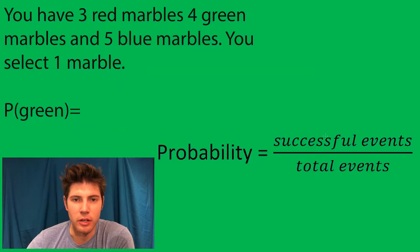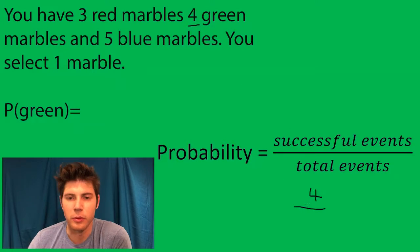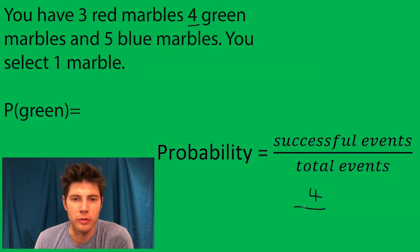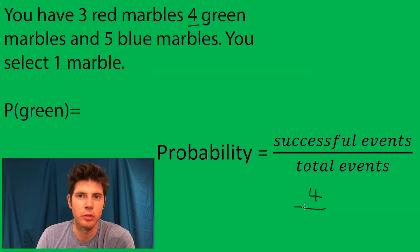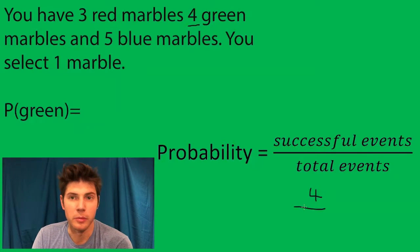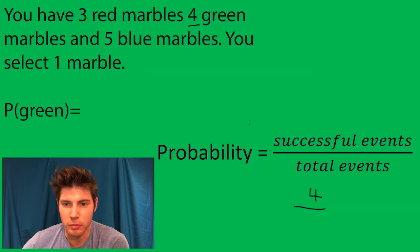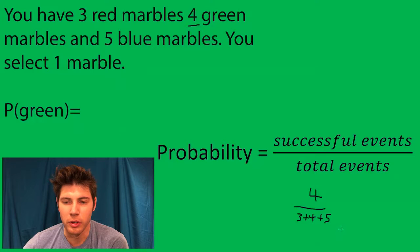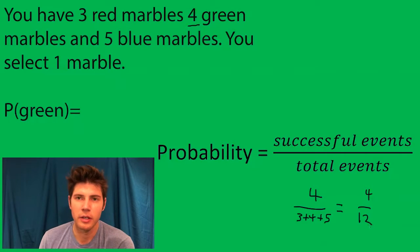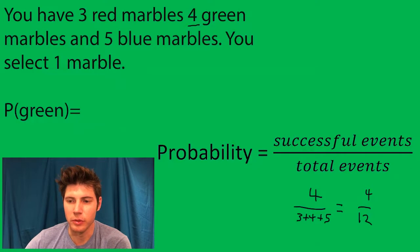Your successful events are the green marbles, and we know that there are four green marbles, so four goes on top. The total events is how many total possible marbles could I pull out — that's going to be three plus four plus five. So this ends up being four over twelve, and that can be reduced to one over three.